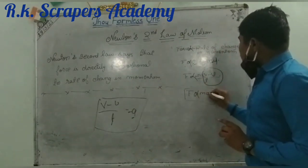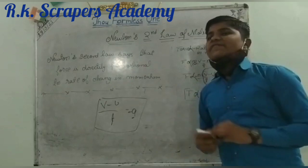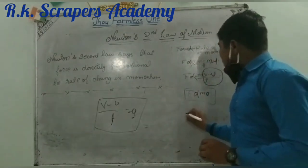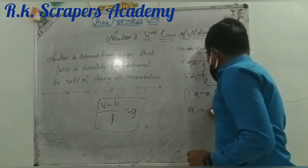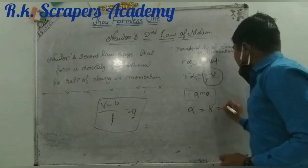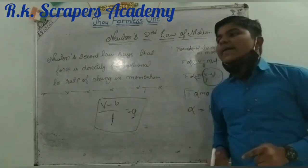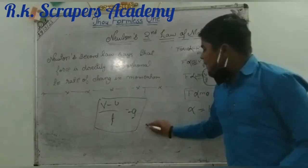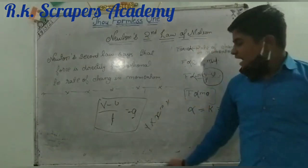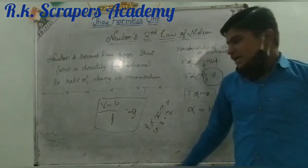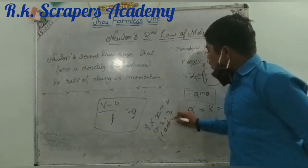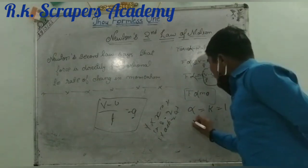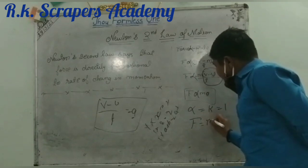So here, force is directly proportional to mass into acceleration. Now, after finding further results, it was known that the proportionality sign can be replaced with a constant k, and k is equal to 1. We all know that if we multiply any number or algebraic identity with 1, it remains the same — 1 into x gives x, 1 into 2 gives 2. So same here, when we multiply 1 into m into a, we get the formula: force is equal to mass into acceleration.